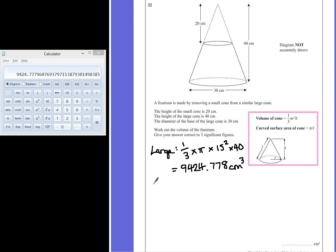So for the smaller cone, we can use exactly the same rule: 1/3 multiplied by π multiplied by our radius. Now the radius here is going to be half of what it was previously. So if the diameter is 15, the radius will be 7.5.